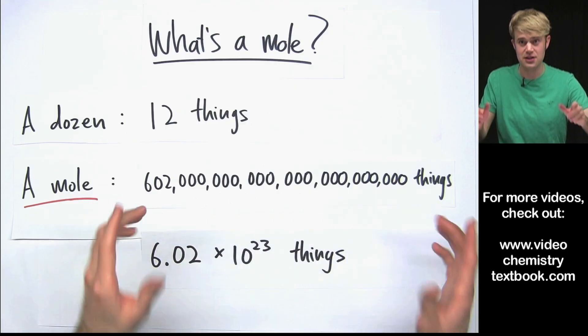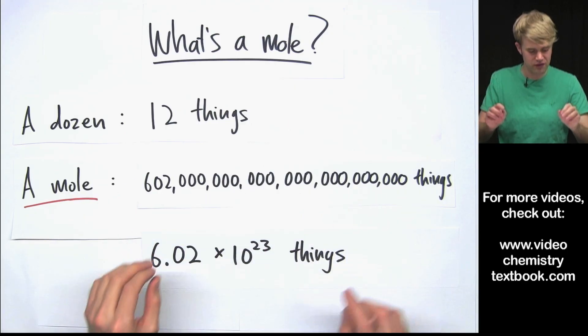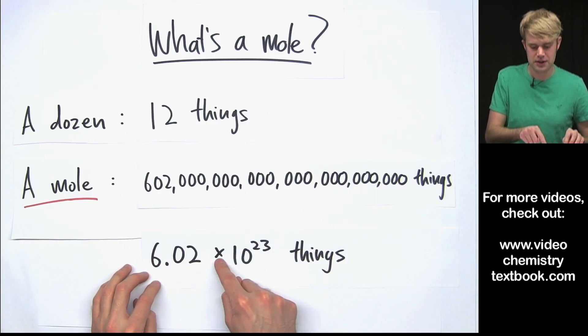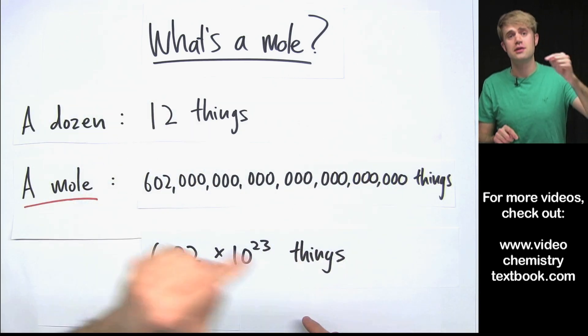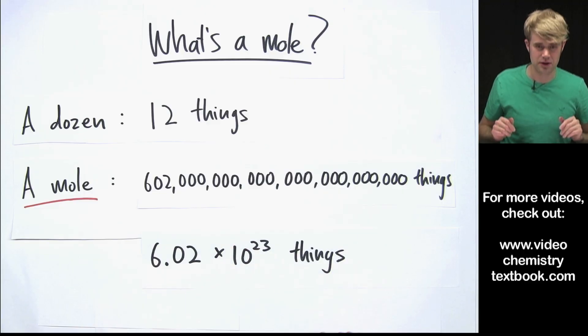And these 602 hexillion things are often abbreviated as 6.02 times 10 to the 23rd. So now we can apply what we've learned here to the problem that we first started at the beginning of the video.